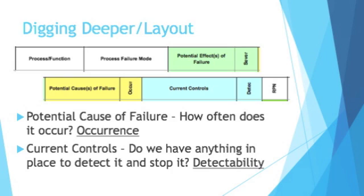Then we have the potential cause of the failure — what exactly caused this failure to happen? Everything has a cause. You might need to do a root cause analysis, operator interviews, things like that. A lot of times you'll do an FMEA ahead of time, at least ideally, so you need to talk to people who are experienced with that process — your mechanical or electrical engineers. With your potential cause of the failure, how often does this cause happen and create a failure? That's your second numeric score, known as the occurrence.